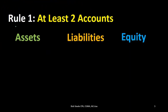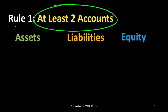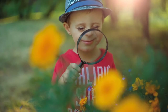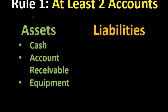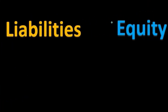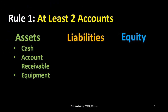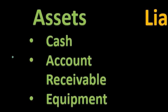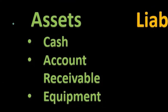That first rule is at least two accounts are affected. When we look at the accounting equation, we are looking at assets, liabilities, and equity — assets equaling liabilities and equity. However, these are account types, not the actual accounts. Under asset accounts, we have accounts such as cash, accounts receivable, and equipment. These are the actual accounts which fall under the account type of assets.